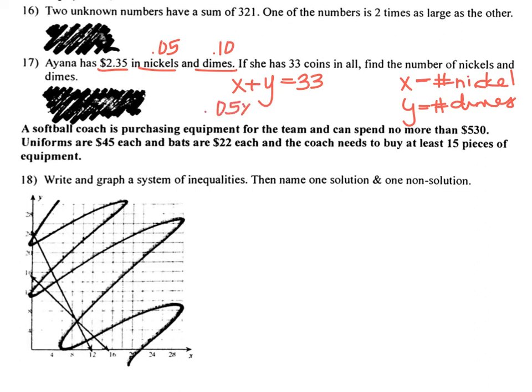And then we need to use the money part of it. So a nickel is 5 cents each, so that's 0.05X, plus a dime is 10 cents each, so 0.10Y equals 235. And we said in class you want to make sure that you keep those decimal places so that you don't forget that you're talking about cents and not whole dollars.